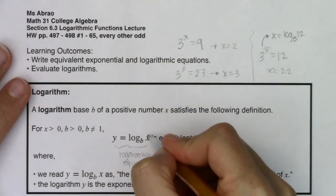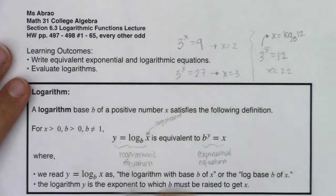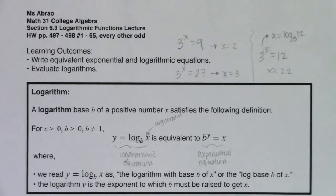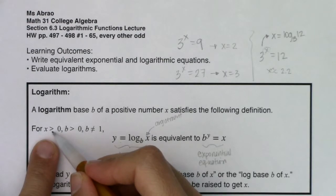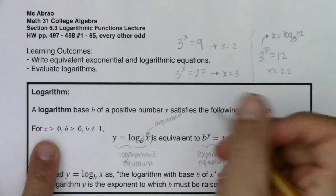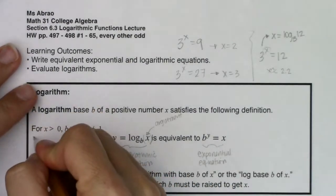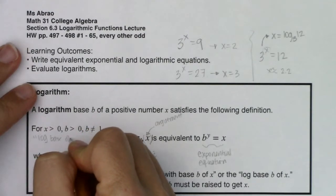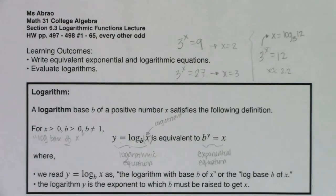Let's get some terms down. The x in log base b of x is called the argument of the logarithm. We have three domain issues throughout this course: fractions, radicals, or logarithms — so we're picking up this third domain issue. This argument must be strictly greater than zero; it can't be zero or negative. Also, log base b of x is not multiplication — it's not log times x. I would say this out loud as 'log base b of x,' and I want to stress that 'of' — it's not times x.